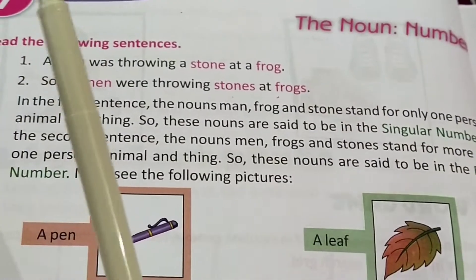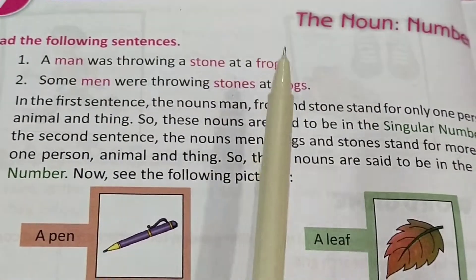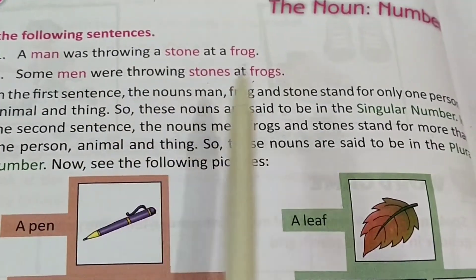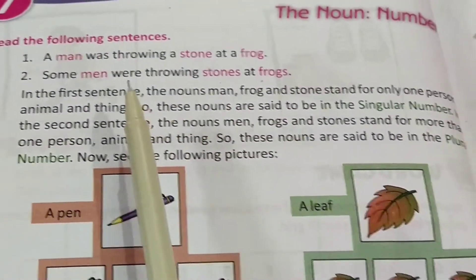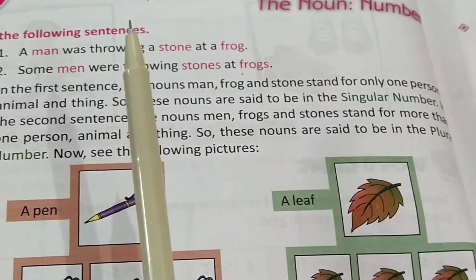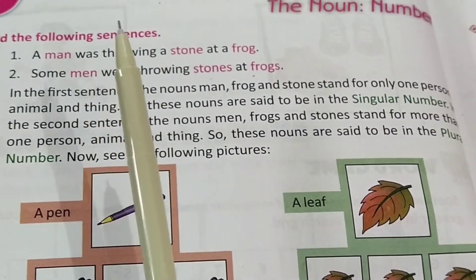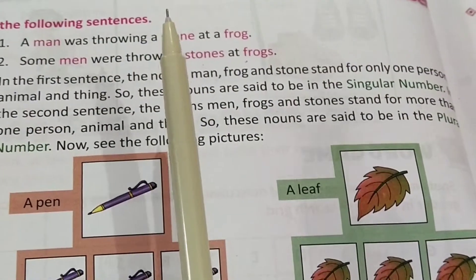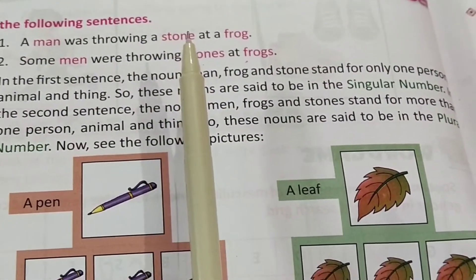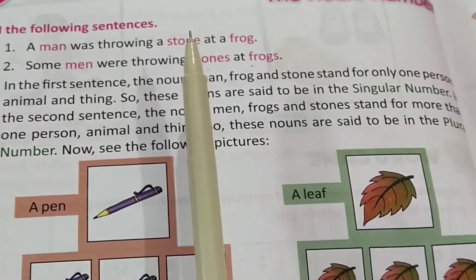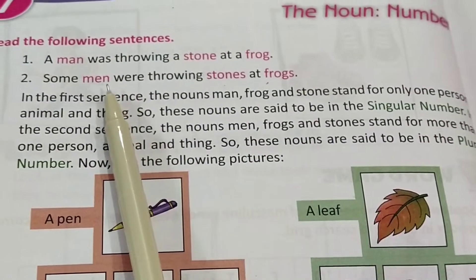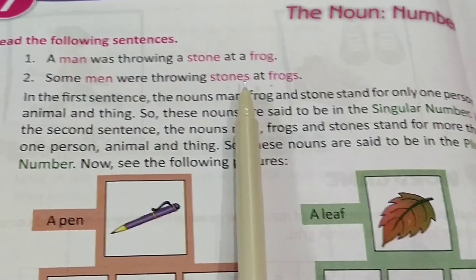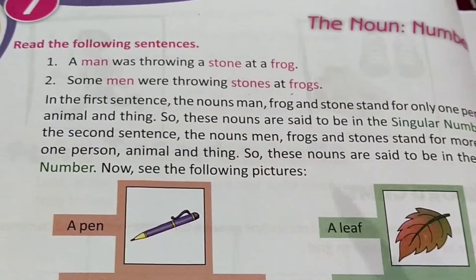We are talking about one man, one stone, and one frog. In the second sentence, nouns like men, stones, and frogs are more than one. Here we are talking about more than one person, more than one animal, more than one thing. So these nouns are said to be plural number.